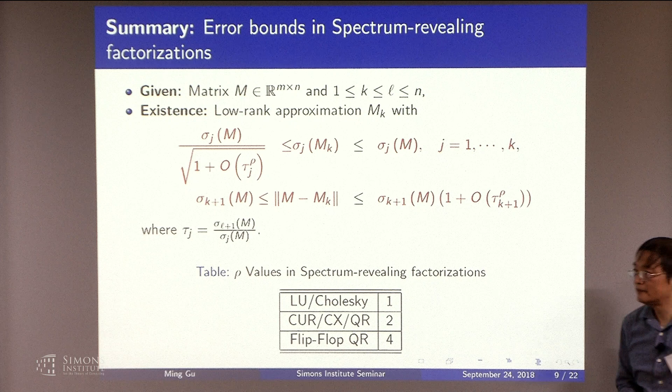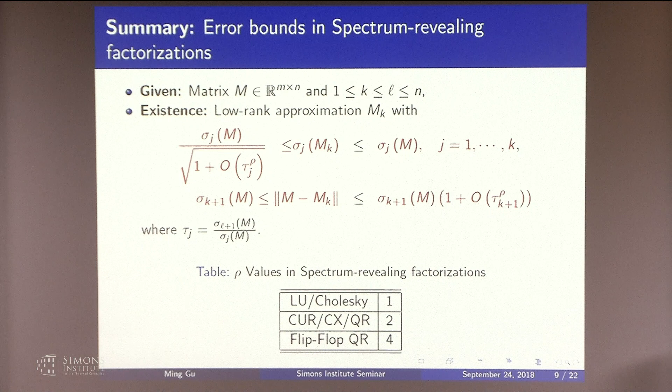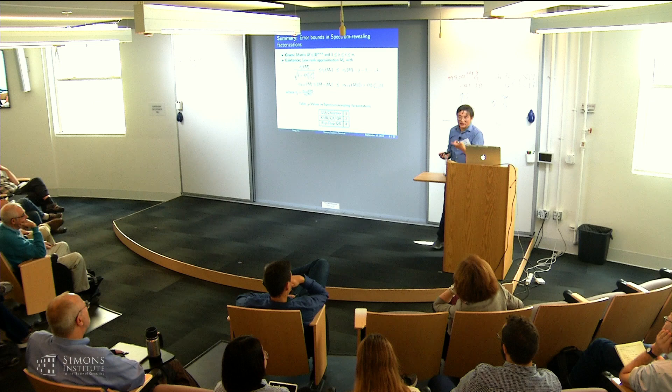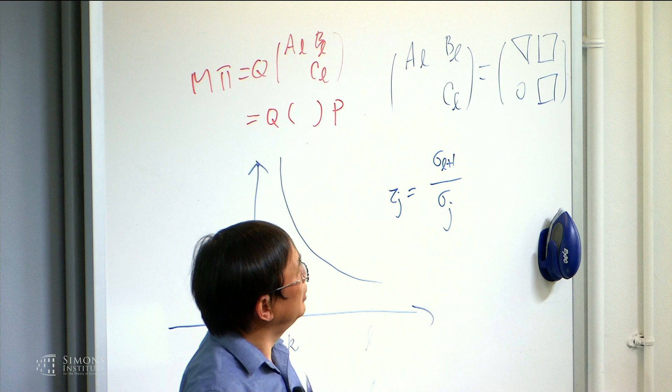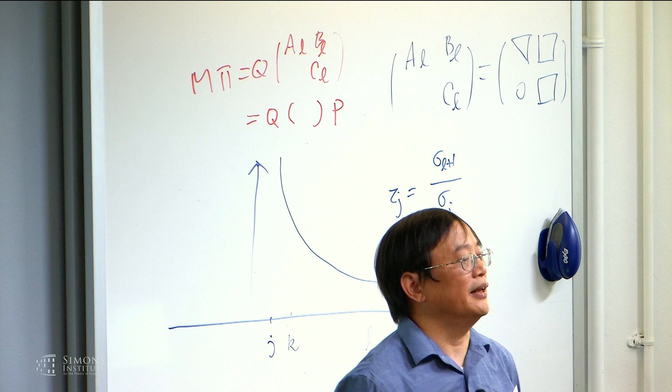It's basically, you can think of this as like a subspace iteration on the whole matrix. It's also the Stewart's method. Stewart's called it a P or Q or something. Q or P. That's the Stewart QRP algorithm. But he does it very slowly. We do it very quickly.